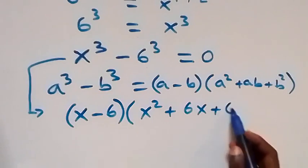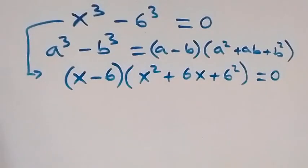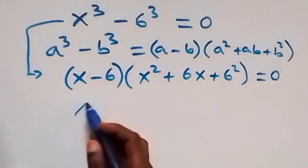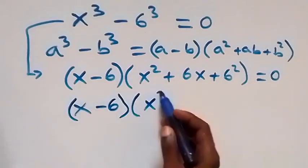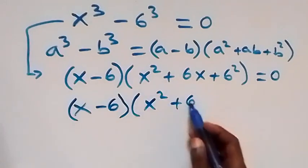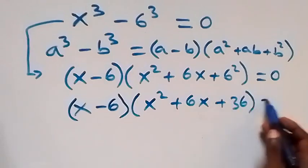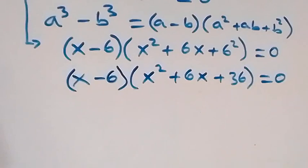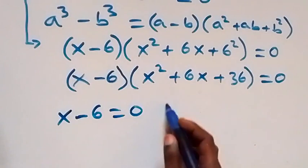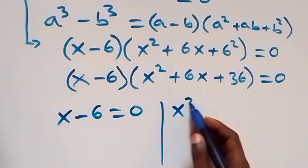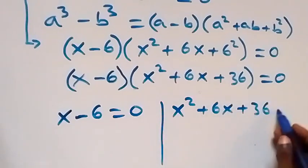Writing it out, we get (x minus 6)(x² plus 6x plus 36) equals 0. From here, we have two cases: either x minus 6 equals 0, or x² plus 6x plus 36 equals 0.